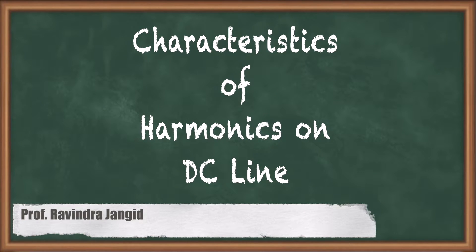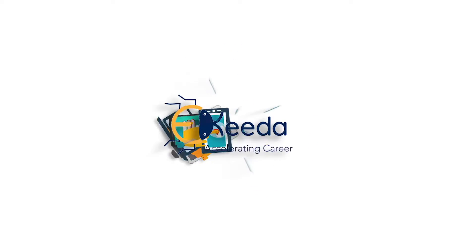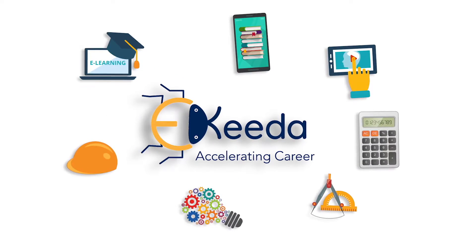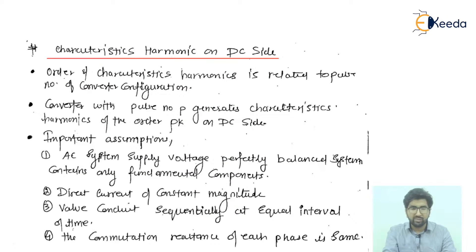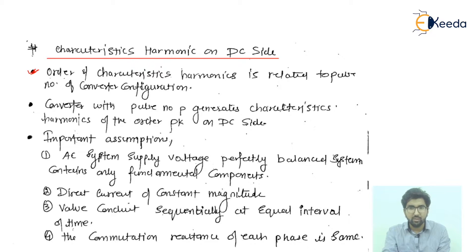Hello everyone, welcome to the Ikeda platform. This is Ravin Jangir, your electrical faculty. In this video I am going to talk about the characteristic harmonics on the DC side. We will start with the points listed here. Harmonics are related to the pulse number of the converter — we have already discussed what characteristic and non-characteristic harmonics are.